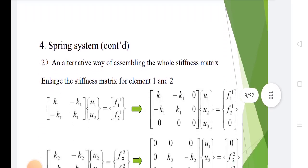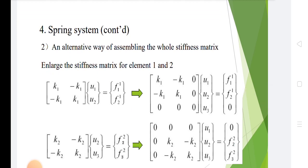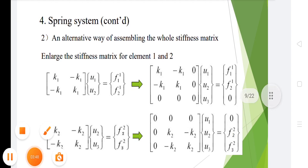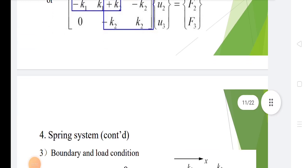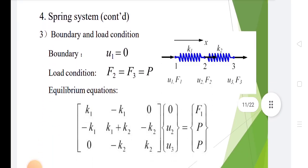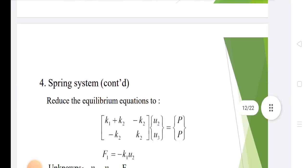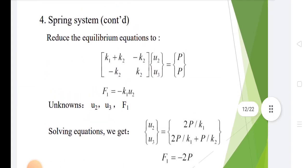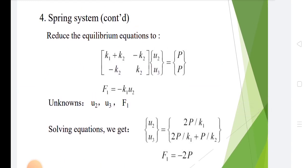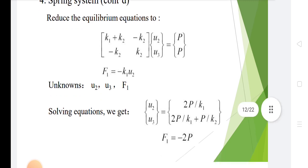For the spring system, this is the assembly of the whole stiffness matrix, followed by the spring system equations. Boundary and load conditions are applied and the equilibrium equations are reduced. These are the steps of FEA. After reduction, f1 equals minus k1·u2. Solving the equations, we get f1 equals minus 2P.